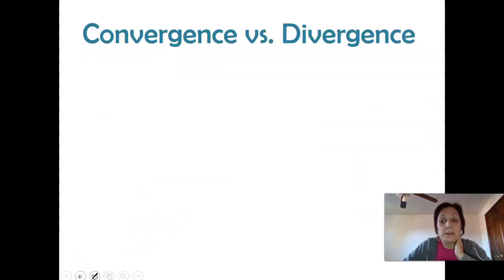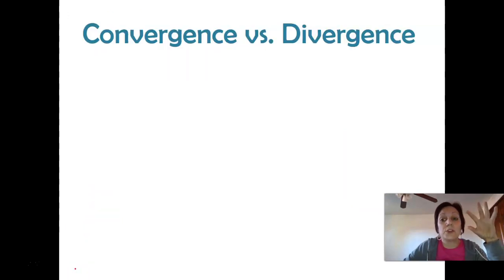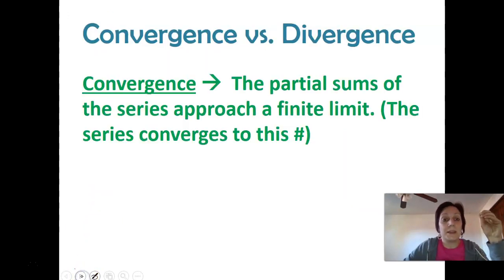All right, so there are two things that a series can do. It can converge or diverge. Converge means that it's going to approach some limit. So in other words, as you start looking at your partial sums, you do the first, the second, the third, the fourth, the fifth partial sum, what you see are your partial sums approaching some limit. They're converging to a number or they're approaching a limit.